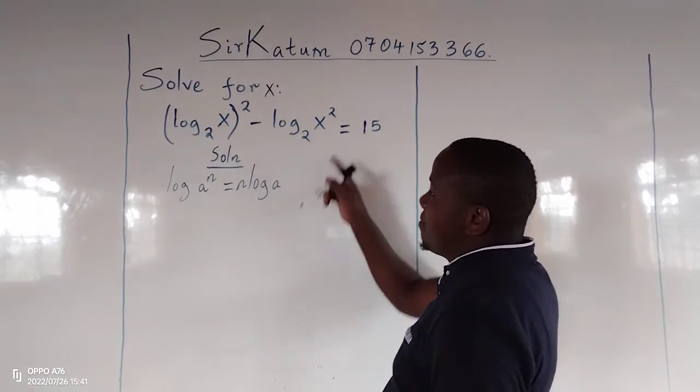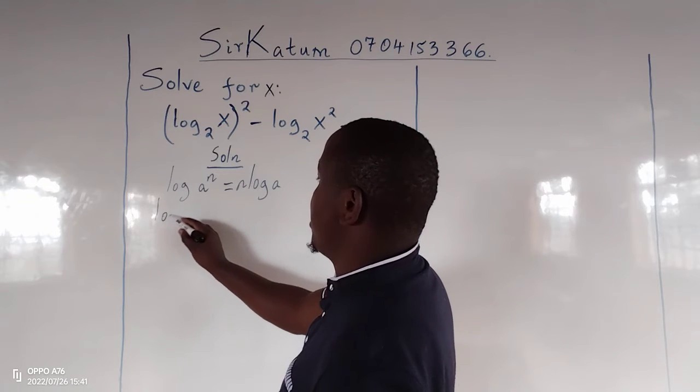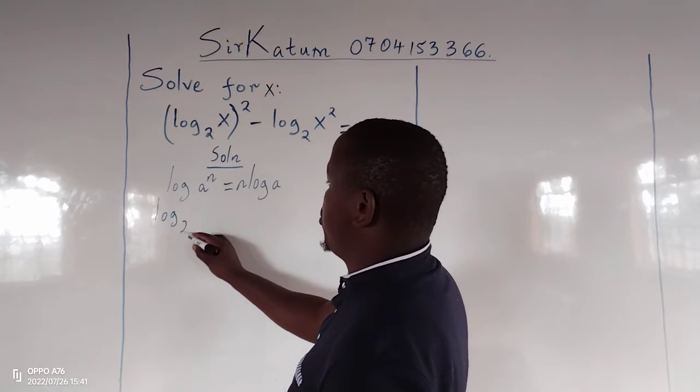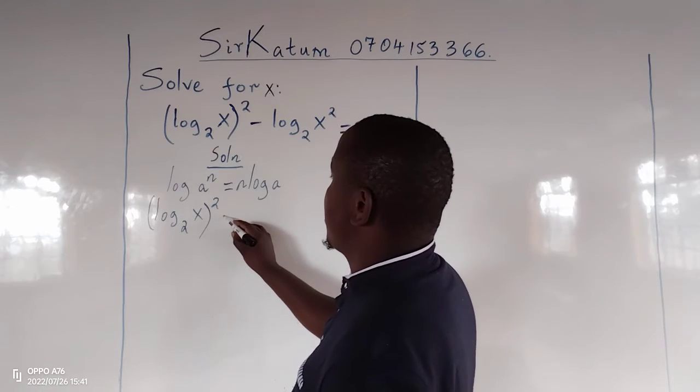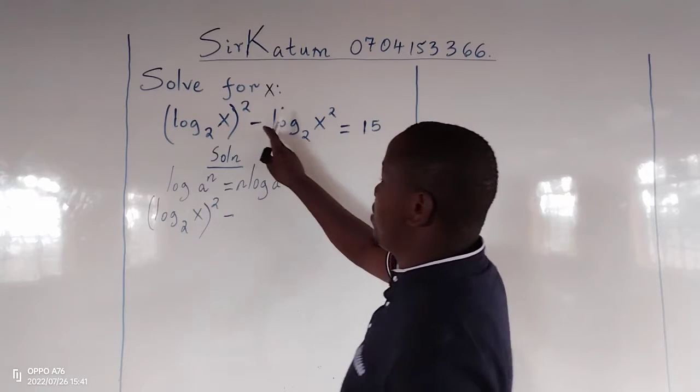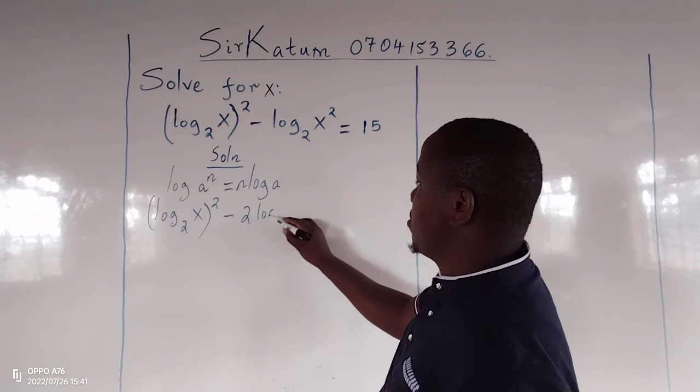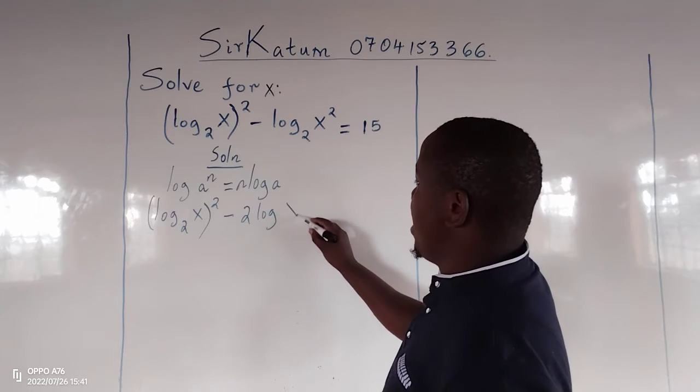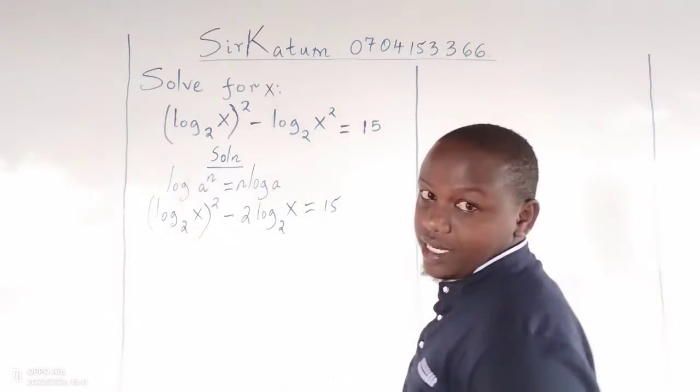This means this term in the equation can be expressed as logarithm to base 2 of x, this one is squared, minus, we drop the 2 here now, so the power 2 becomes 2 multiplied by the log of x to base 2 equals 15.